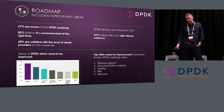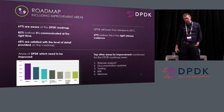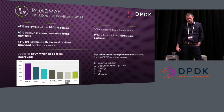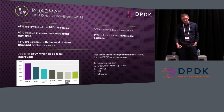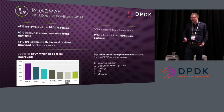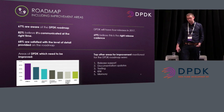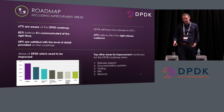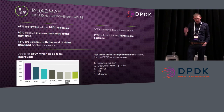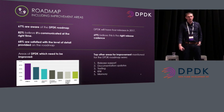Almost 70% of respondents believe four releases in 2017 is the right release cadence. In terms of roadmap items for areas of DPDK that need improvement, you can see a list on the left-hand side. But of more interest was the level of feedback in the comments — the top other areas mentioned were: the need for greater release support, updated documentation, more transparent and visible testing, a continuous integration and test environment, KNI improvements, and memory.